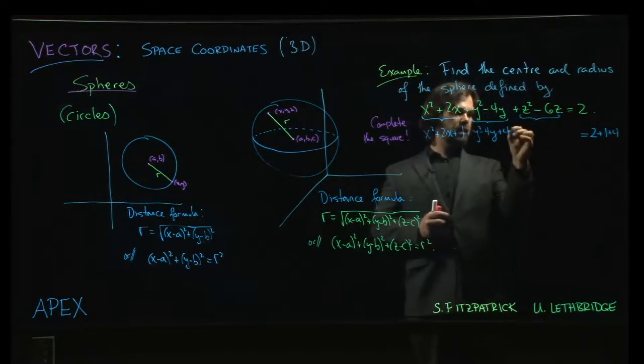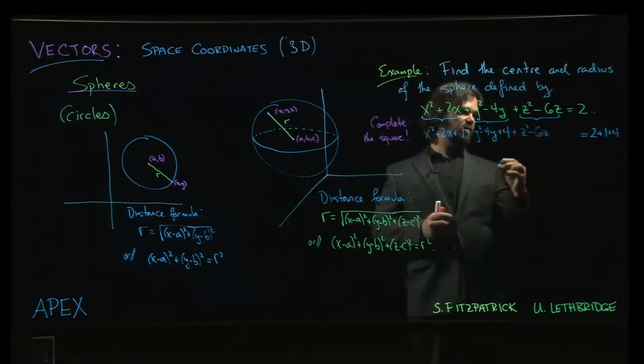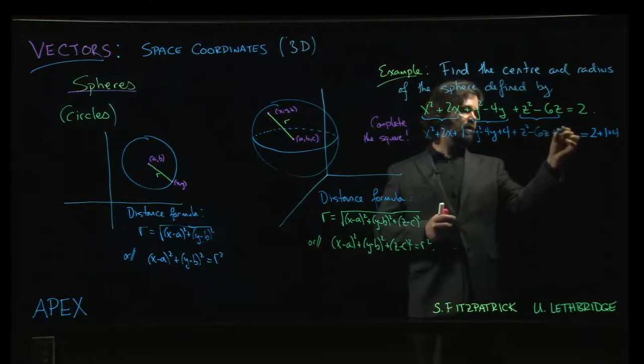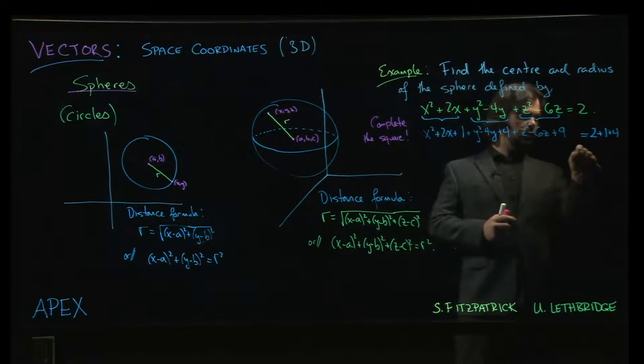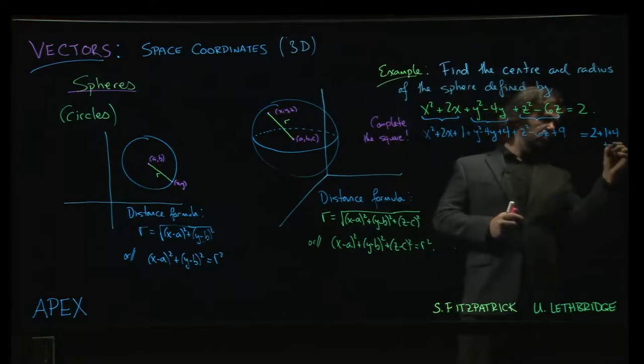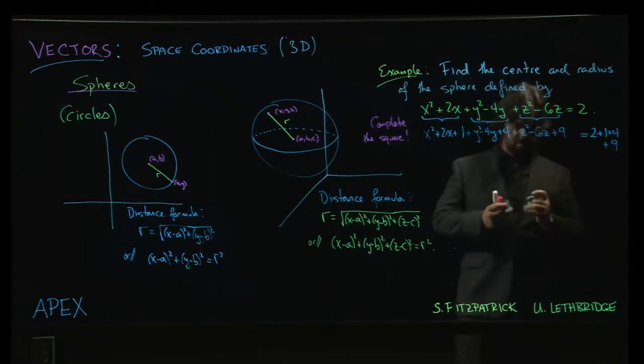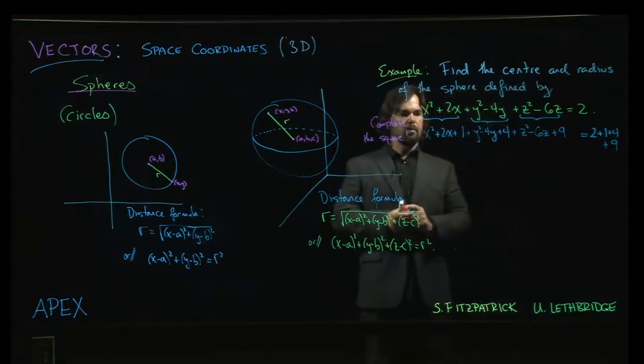And looking at z, z squared minus 6z. Now half of minus 6 is minus 3. Squaring that gives me 9. I could have given myself a little bit more room there, but I think we're okay.